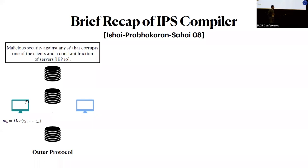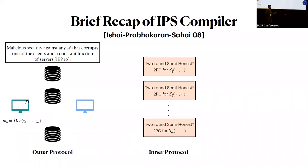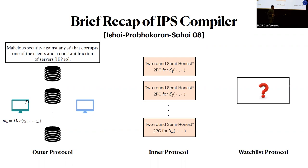Such a protocol was constructed in the work of Ishai, Kushilevitz, and Paskin in 2010, in the information theoretic setting without any cryptographic operations. The second component is an inner protocol — a two-round semi-honest protocol computing the server computation of the outer protocol. Specifically, there are M instances of the inner protocol where the i-th instance computes S_i. The final component is the watchlist protocol, whose role I will explain in the next few slides.